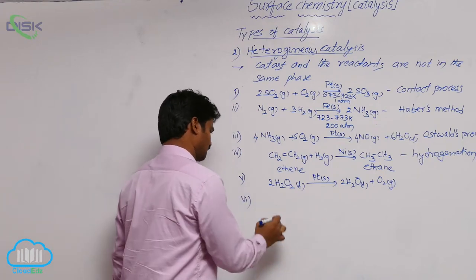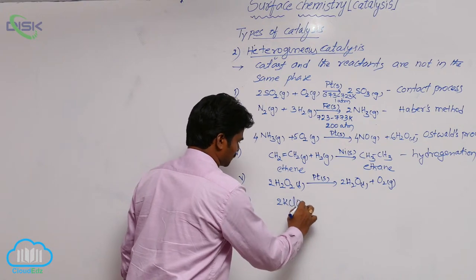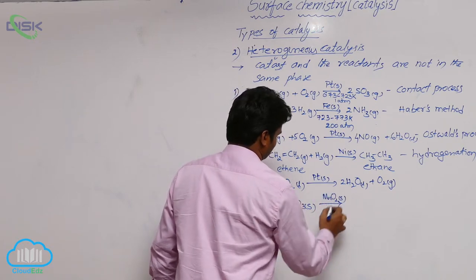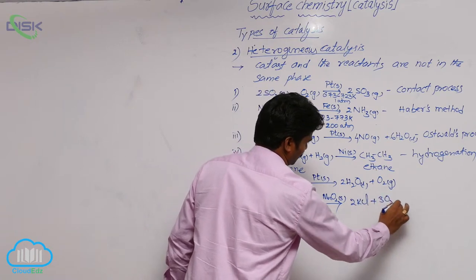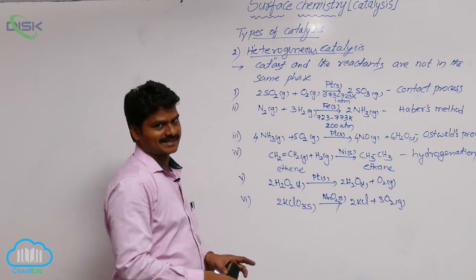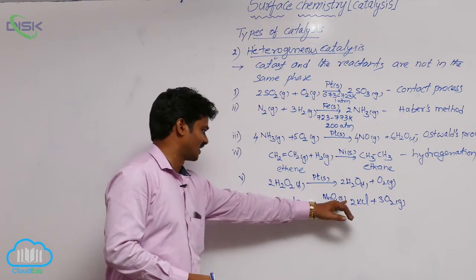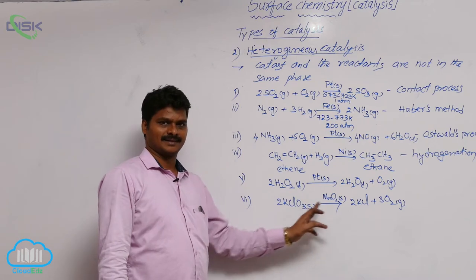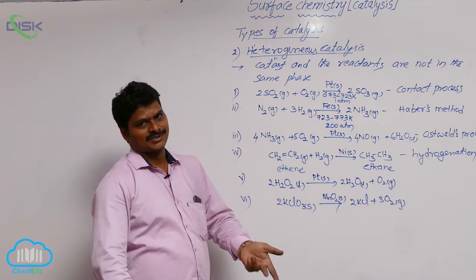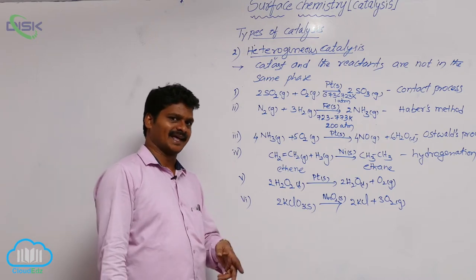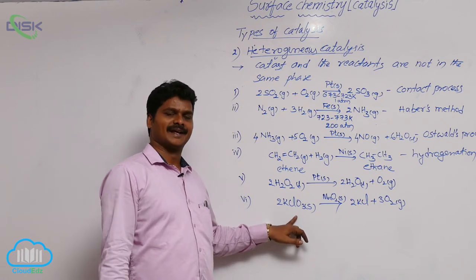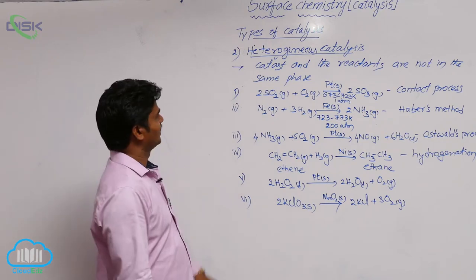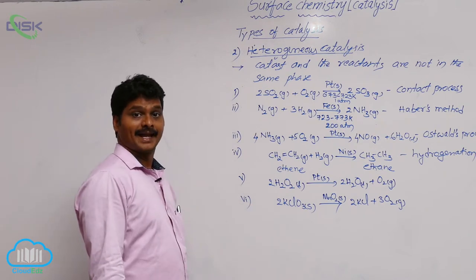With a solid reactant, consider: 2KClO3 solid → 2KCl + 3O2 gas, using MnO2 as a solid catalyst. Here the catalyst and reactant are in the same phase — both solid. However, a mixture of two solids is considered a heterogeneous system, so even though catalyst and reactant are in the same phase, it is classified as heterogeneous catalysis.